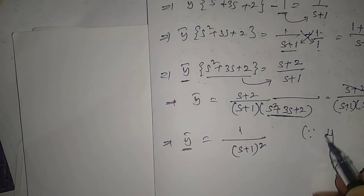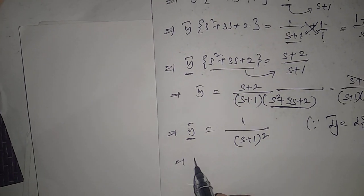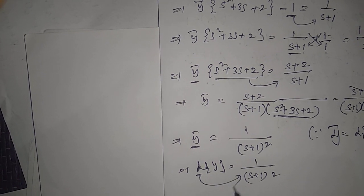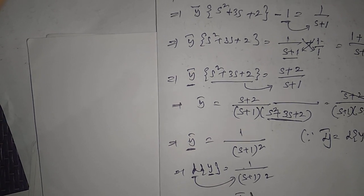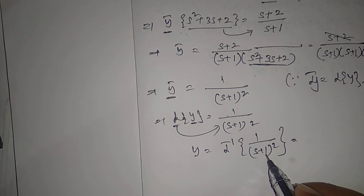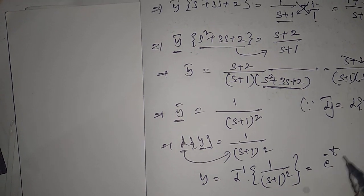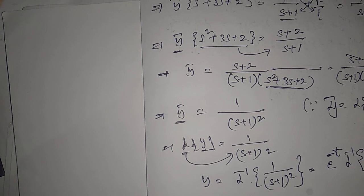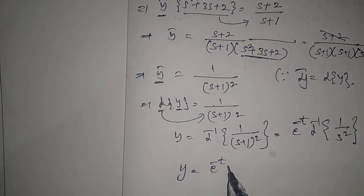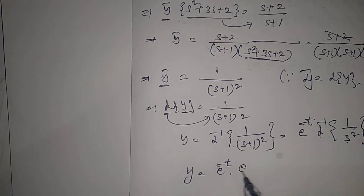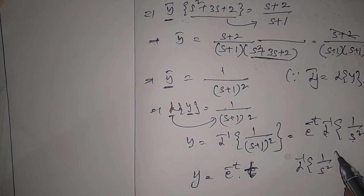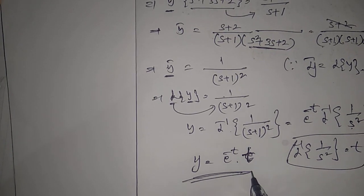Since Ȳ = L{y} = 1/(s+1)², we apply the inverse Laplace transform: y = L⁻¹{1/(s+1)²}. Using the first shifting theorem, the (s+1) term introduces e^(-t), so y = e^(-t)·L⁻¹{1/s²}. Since L⁻¹{1/s²} = t, the final solution is y = t·e^(-t).